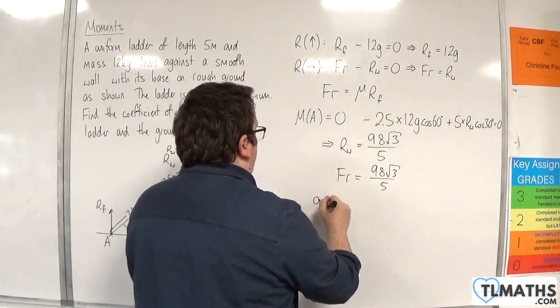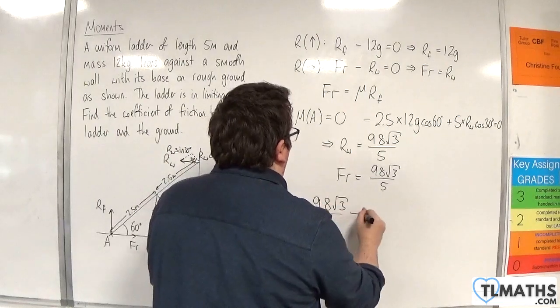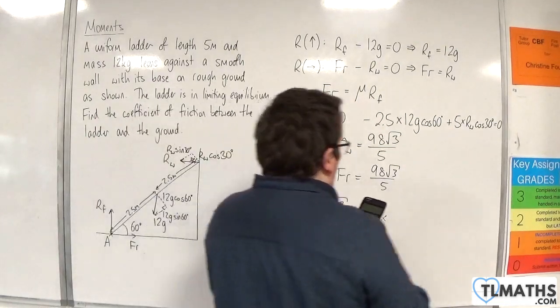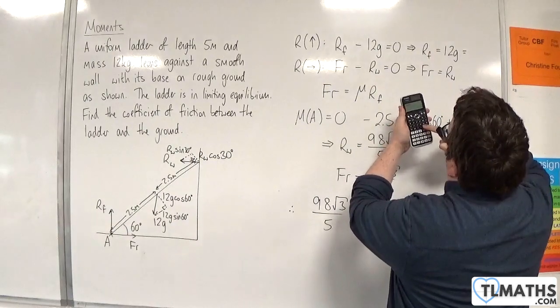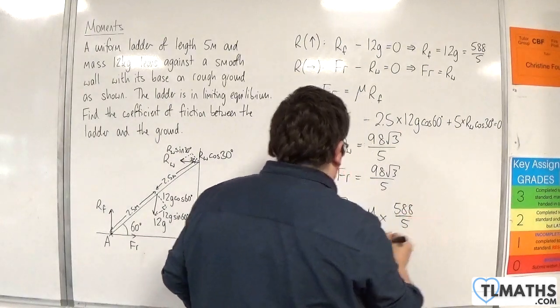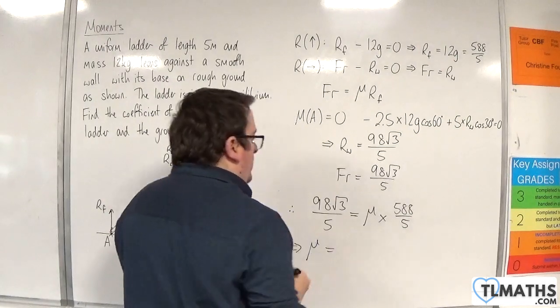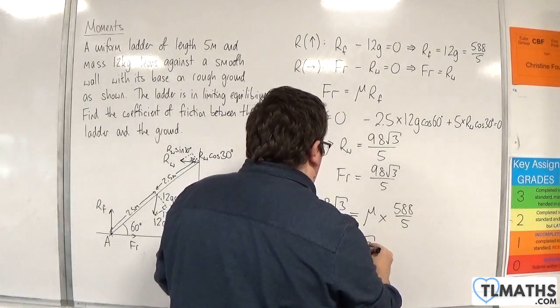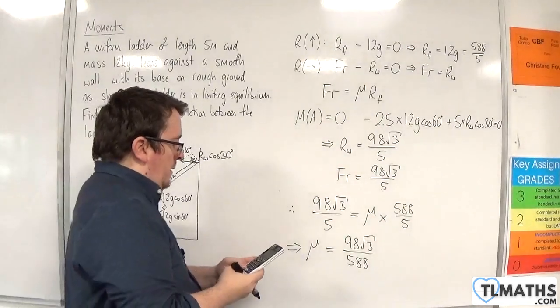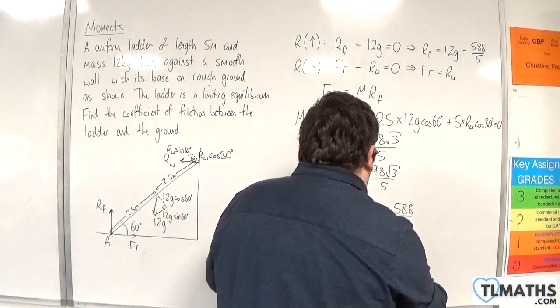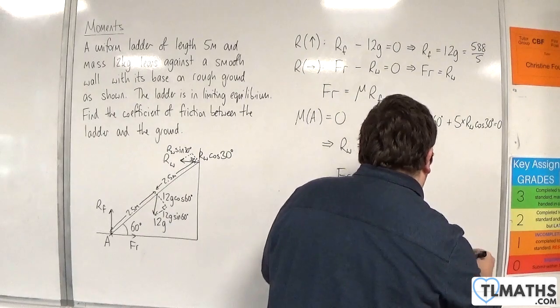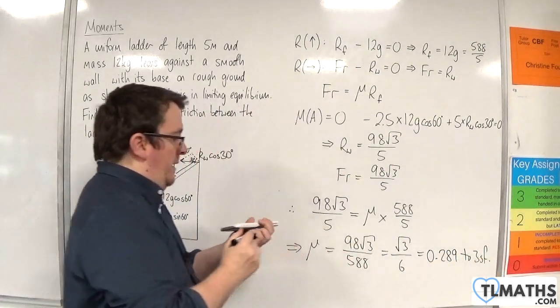So therefore, we have 98 root 3 over 5 is equal to mu times by the normal reaction force, which was 12 times G. So 12 times 9.8 is 588 over 5, so mu is going to be 98 root 3 over 588, which is root 3 over 6, which is 0.289 to 3 significant figures.